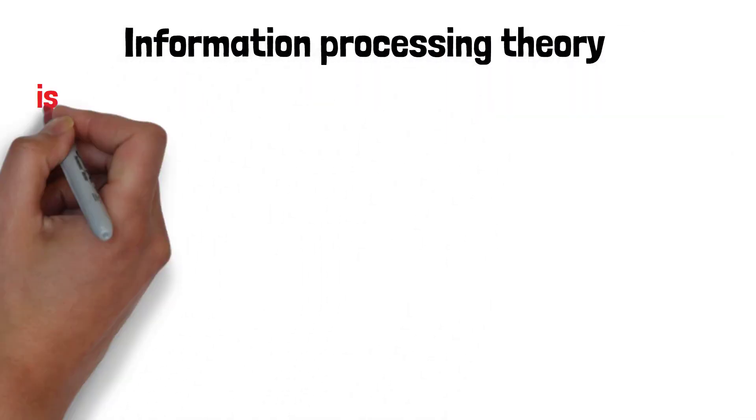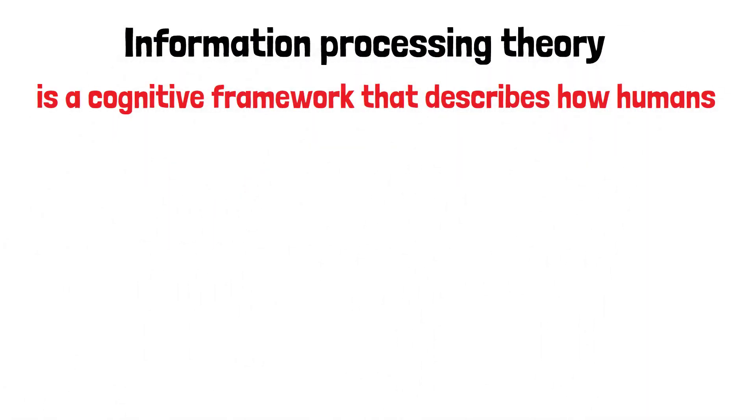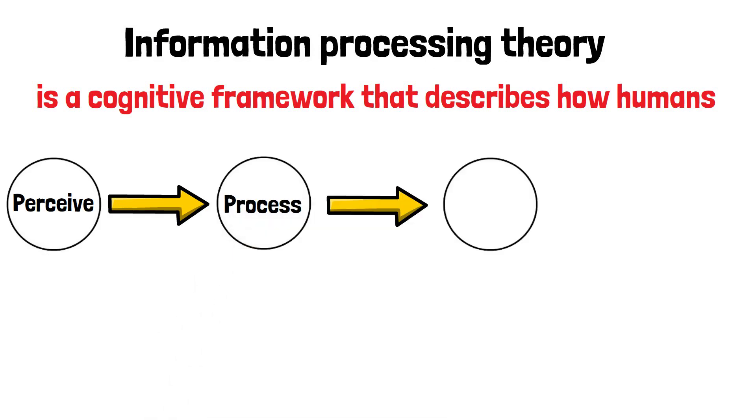Information processing theory is a cognitive framework that describes how humans perceive, process, store, and retrieve information.